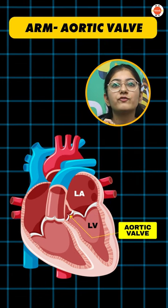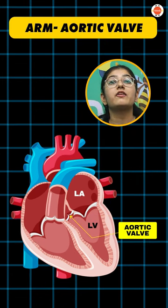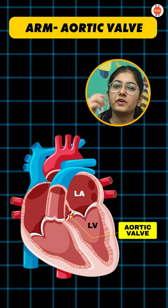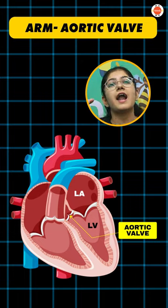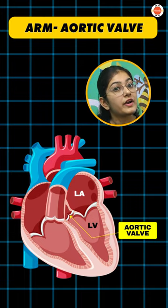Arm — aortic valve, present between the aorta and left ventricle. All these valves prevent the backflow of blood when our heart contracts and relaxes.